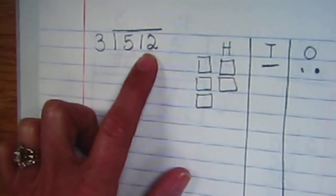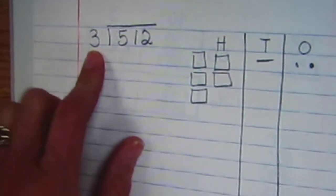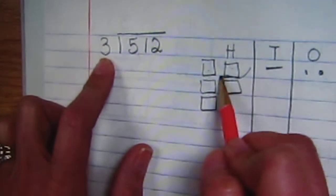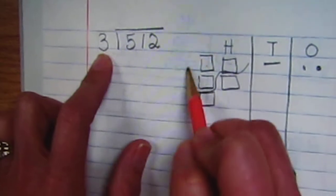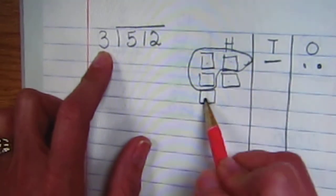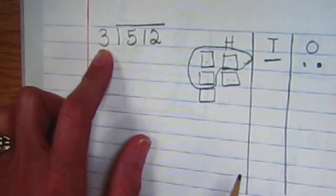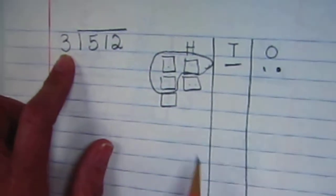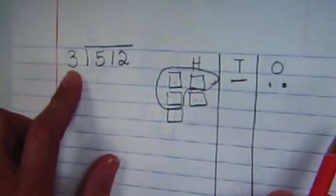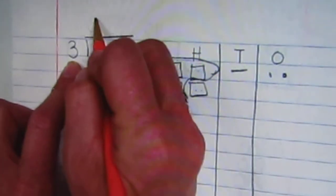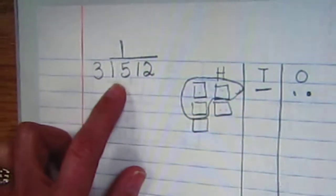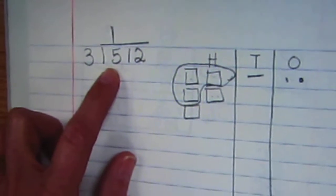Next I'm going to group them in threes: 1, 2, 3. And then I have two left over — I can't make another group. So I have one group in the hundreds, and I'm going to put it over my hundreds place.